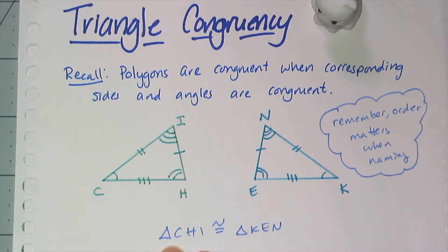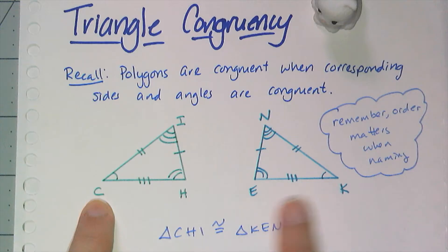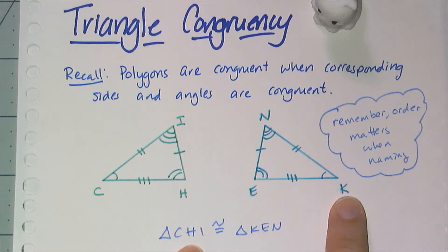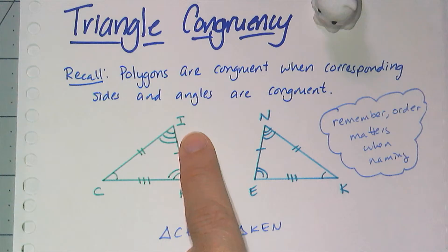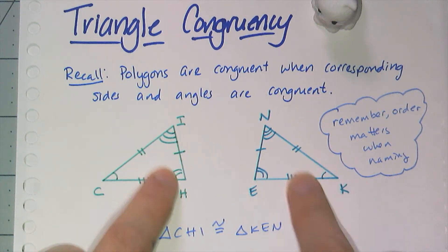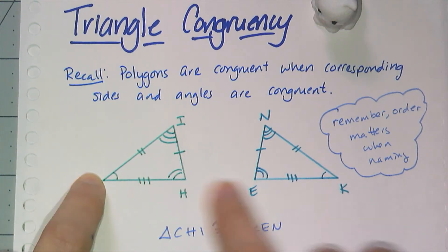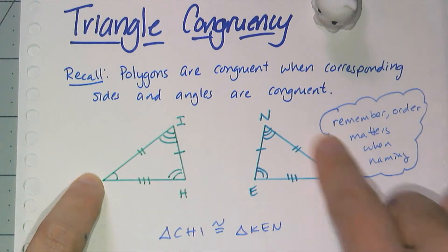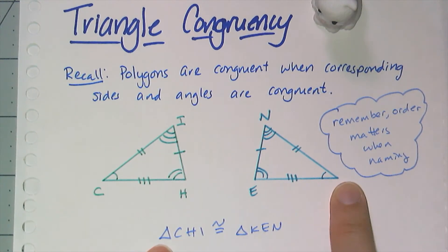Especially when you write congruence statements like this. This statement is saying that angle C corresponds to angle K, angle H corresponds to angle E, and angle I corresponds to angle N, and they are all congruent, and all three sides are congruent. So I can say triangle CHI is congruent to triangle KEN.